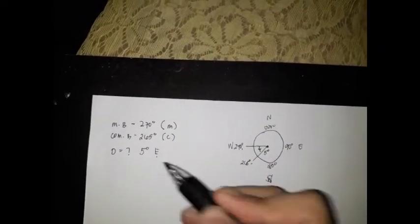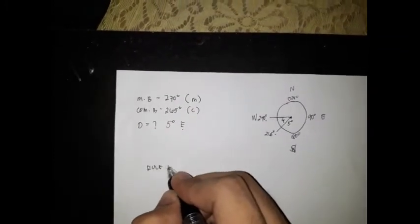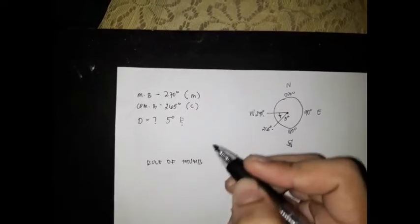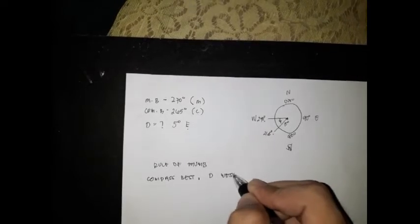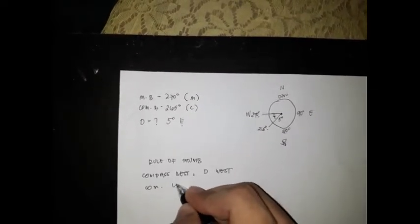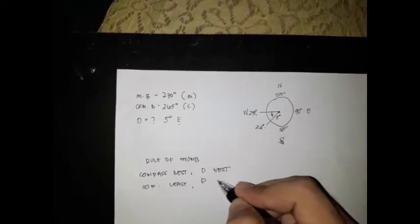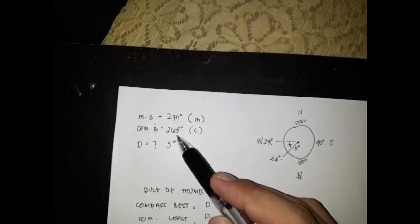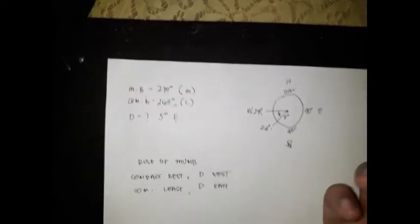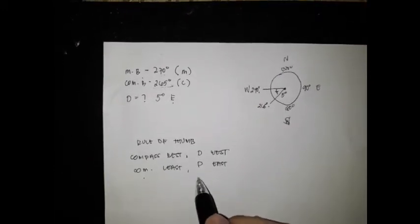Why east? Using the rule of thumb: compass best, deviation west; compass less, deviation east. In our case, our compass bearing of 265 is less than our magnetic bearing of 270. That is why we choose compass less, deviation east — so our deviation is named 5 degrees east.